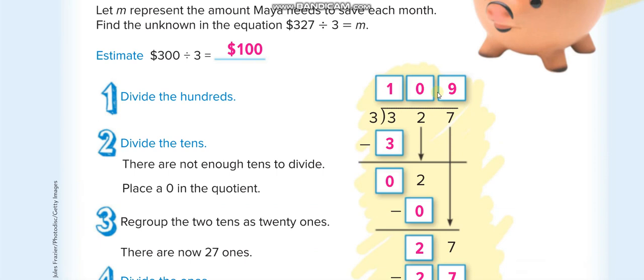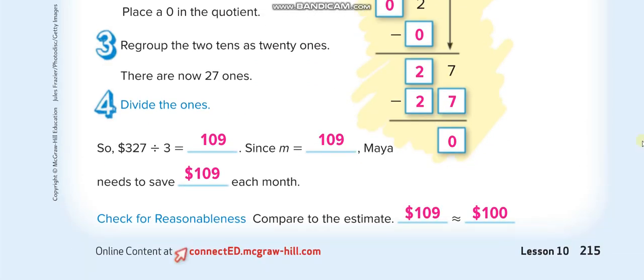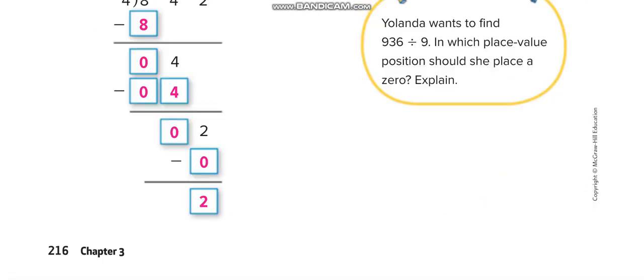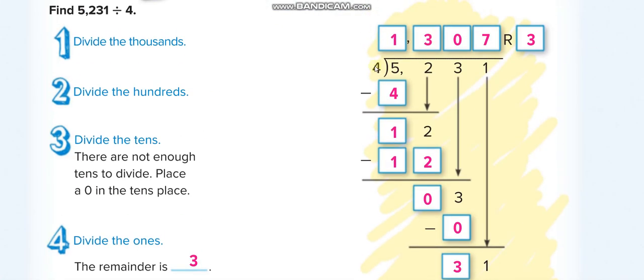Next page, again the same thing. First one is 5, so 4 times 1 is 4, 5 minus 4 is 1. Bring the 2 down. 4 times 3 is 12, 12 minus 12 is 0. Bring the 3 down.